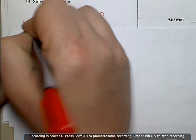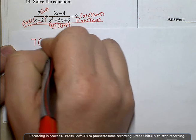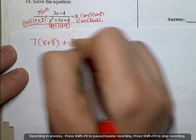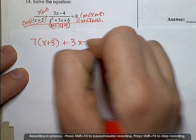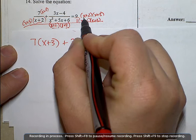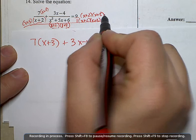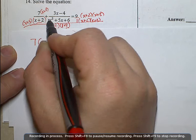Wipe out the denominators. I have 7 times x plus 3 plus 3x minus 4 and 9 times. Well, I already know that x plus 2 times x plus 3 is equivalent to this trinomial.